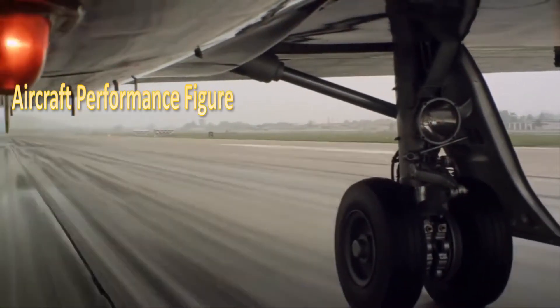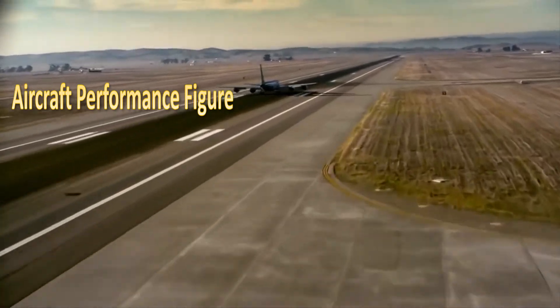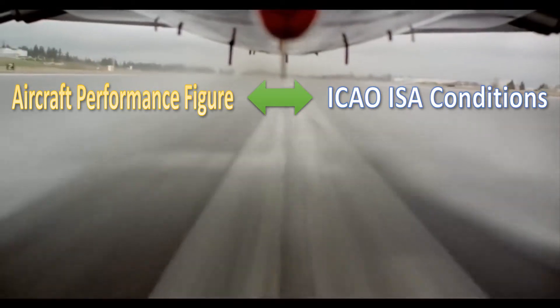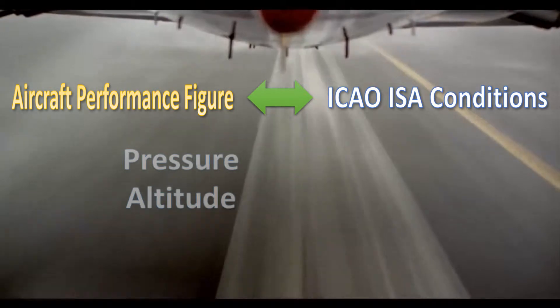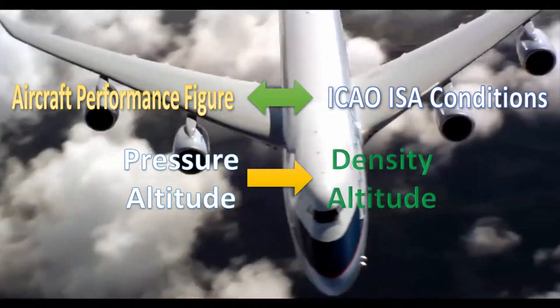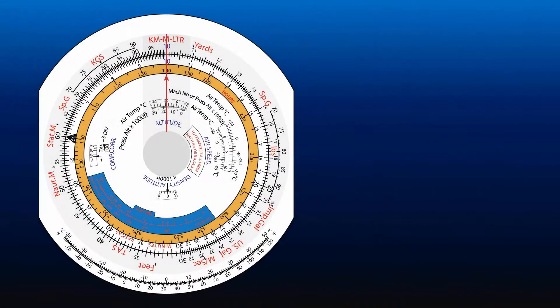Performance figures for specific aircraft are usually presented in relation to ICAO International Standard Atmosphere, ISA, and may require that pressure altitudes are converted to density altitudes. On CRP5 this conversion can be done using airspeed window and density altitude window.